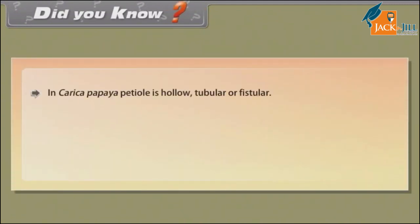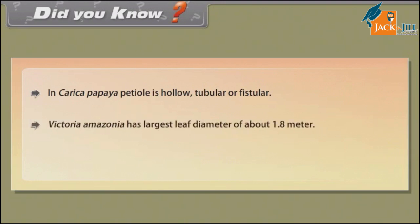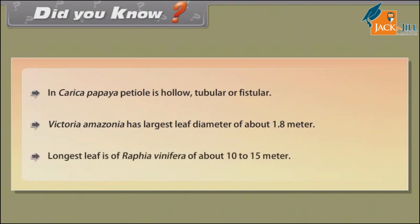Did you know? In Carica papaya, the petiole is hollow, tubular or fistular. Victoria amazonica has the largest leaf, with a diameter of about 1.8 meters. The longest leaf is that of Raphia vinifera, measuring about 10 to 15 meters.